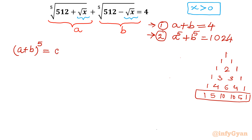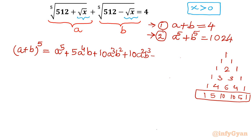So the expansion is: a to the power 5 plus 5a to the power 4 b plus 10a cubed b squared plus 10a squared b cubed plus 5ab to the power 4 plus b to the power 5.